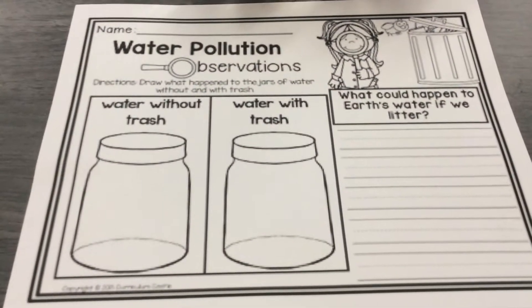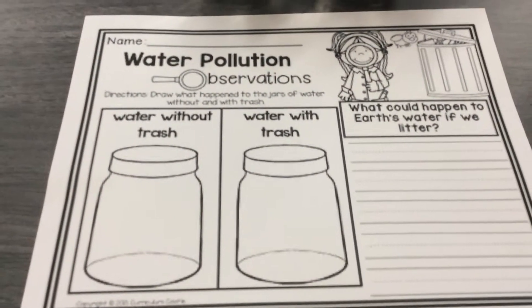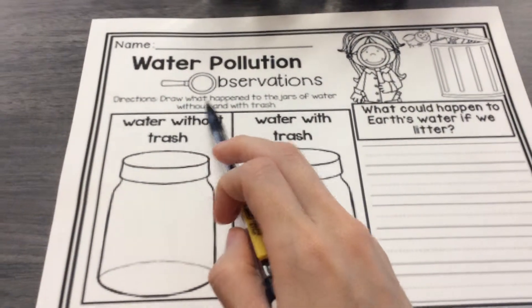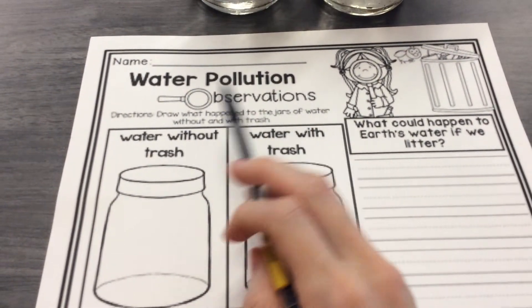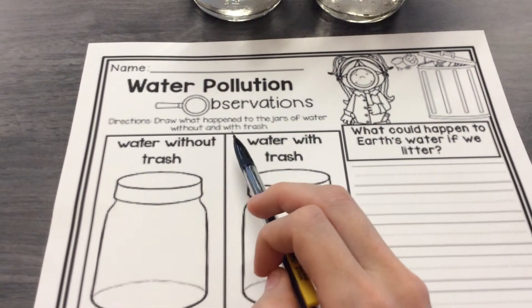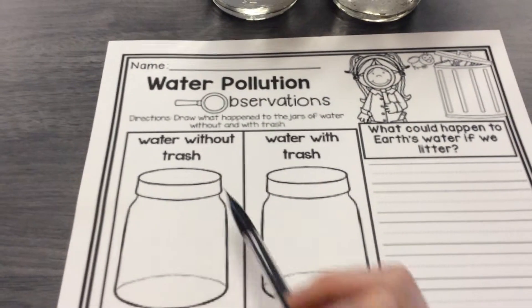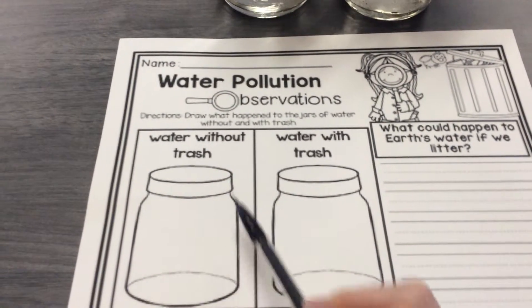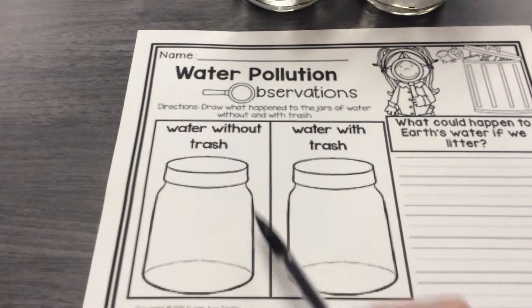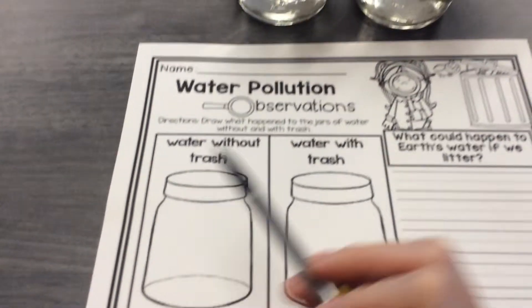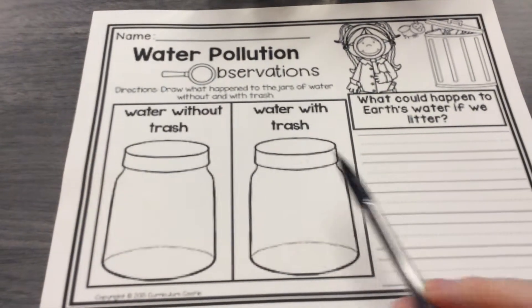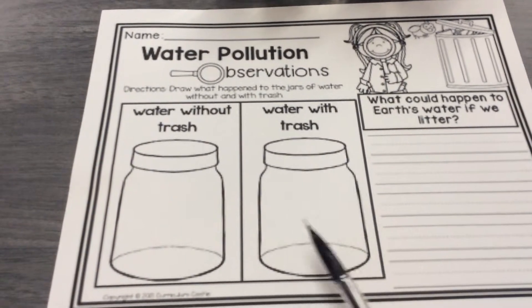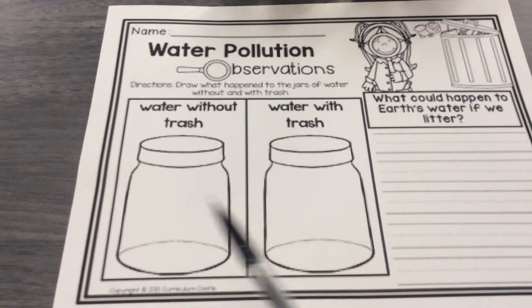You're going to color in and write about what you observe. It says, draw what happened to the jars of water without and with trash. You're going to draw water without trash, and you're going to draw water with trash. What does this one look like compared to this one?